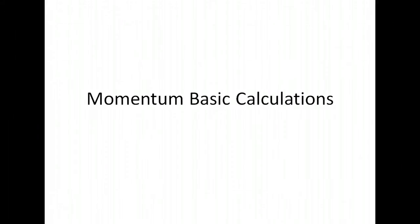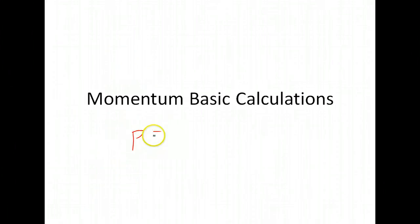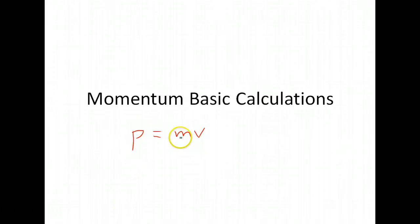We're going to look at some basic momentum calculations. Our formula for momentum is momentum is equal to mass times velocity. We use P for momentum because M is already taken and used for mass.